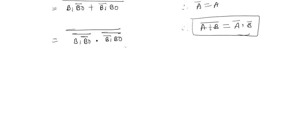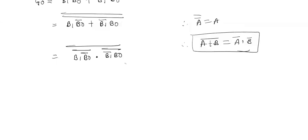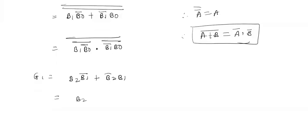Similarly, I will find out the expression for G1, G2, G3 and so on. Now for G1, my expression will be: B2·B1̄ + B2̄·B1. This expression I can rewrite as: (B2·B1̄)·(B2̄·B1) bar, and the whole bar.